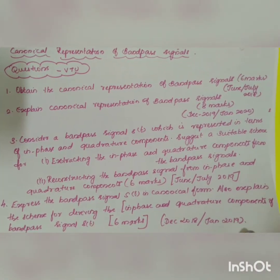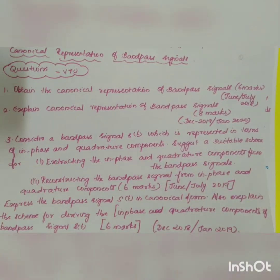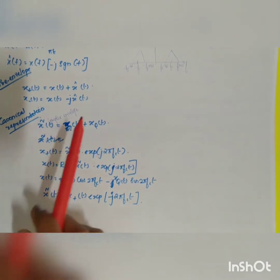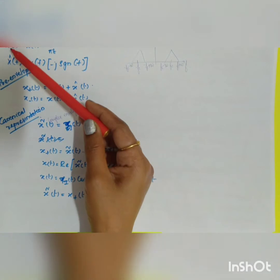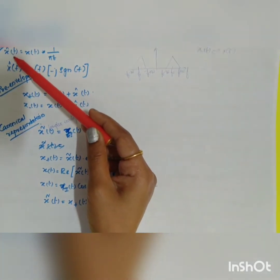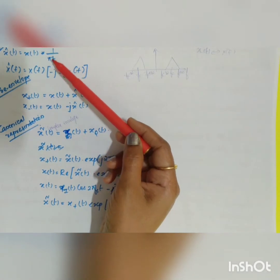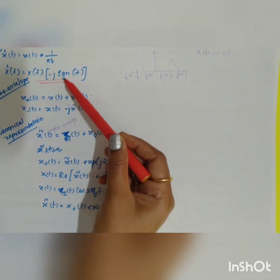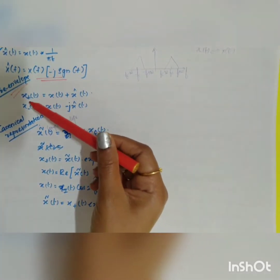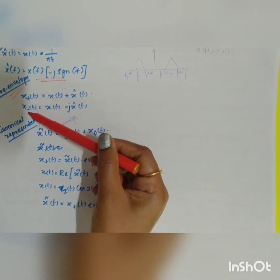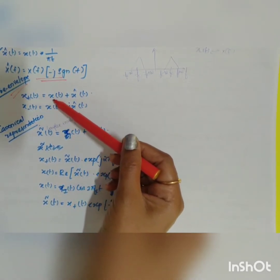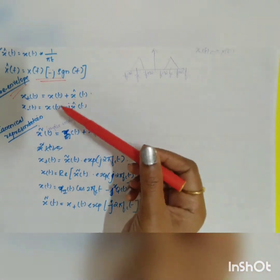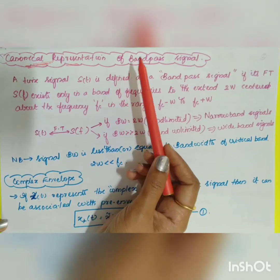Today we will cover canonical representation of bandpass signal. Before going into that, we recall what was studied in previous classes. We started with the Hilbert transform: x̂(t) = x(t) convolved with 1/πt, so taking the Fourier transform gives X̂(f) = X(f) · (−j·sgn(f)). We also covered the pre-envelope: x⁺(t) = x(t) + jx̂(t), and x⁻(t) = x(t) − jx̂(t).